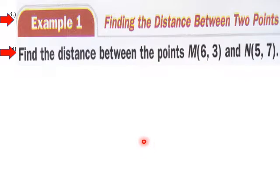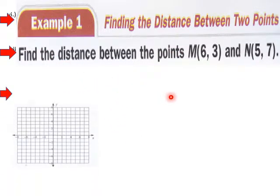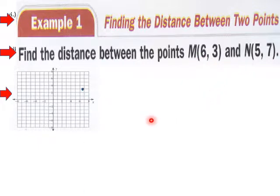Example one, finding the distance between two points. Find the distance between M(6, 3) and N(5, 7). You can plot the points here. 6 comma 3 is here, then 5 comma 7 is here.